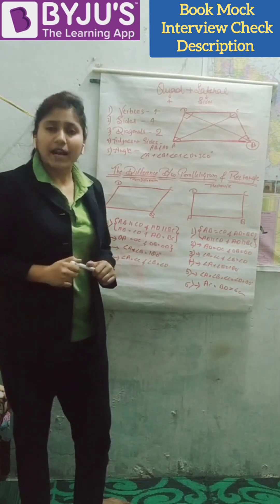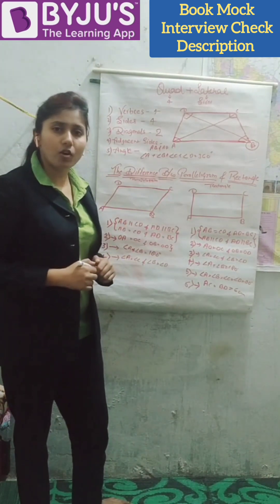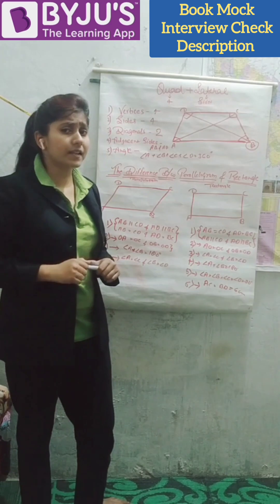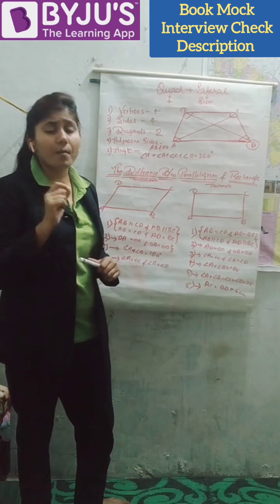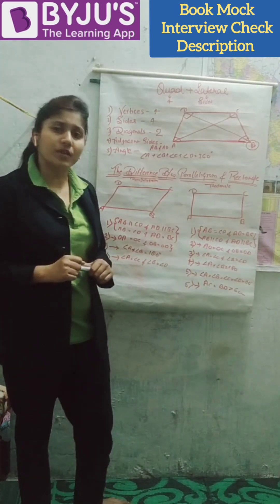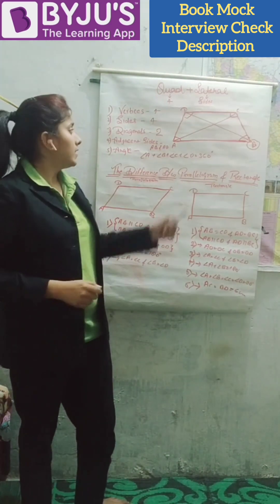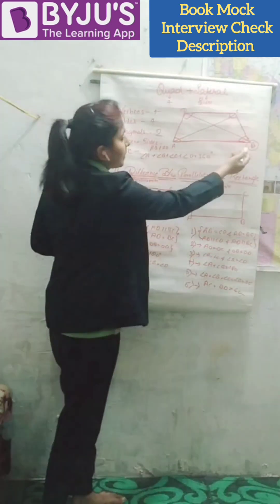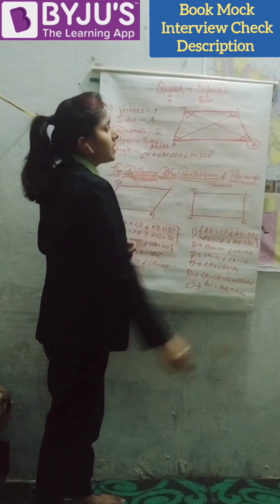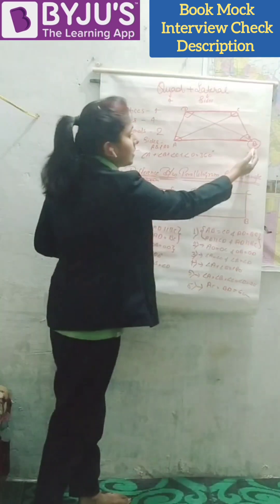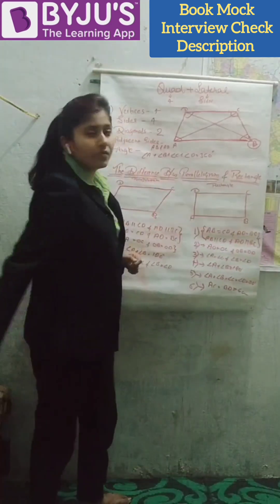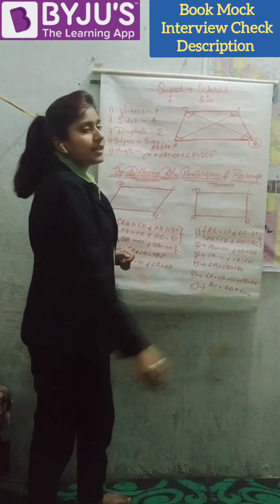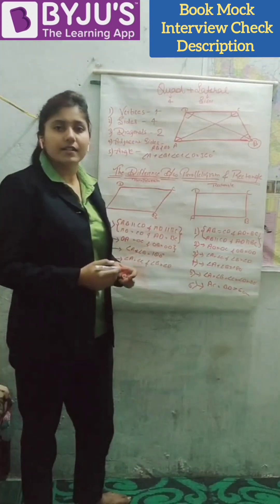Fourth is adjacent sides. What is the meaning of adjacent sides? Two line segments that have a common end point are known as adjacent sides. Look at this figure. The line segments AB and BC have a common end point B. So we can say that AB and BC are adjacent sides.